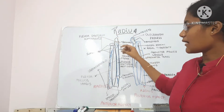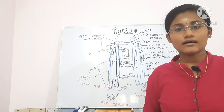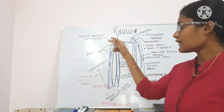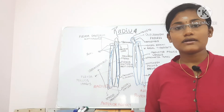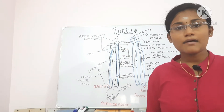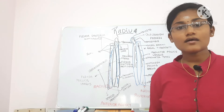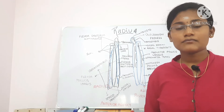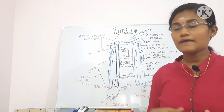Now let's talk about the ossification of the upper end. There is one secondary center present in the head; it appears by the fifth year and completes ossification by the twelfth year.